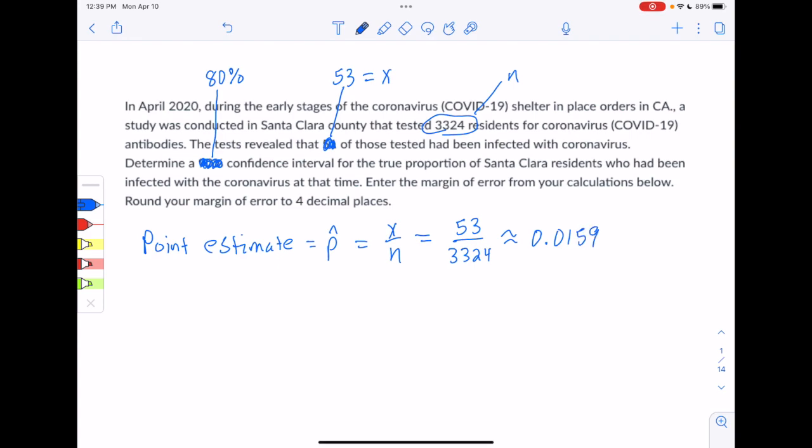Alright, so now we move on to this question, which is to use this point estimate to determine a confidence interval. If we go to our formula sheet and write down the formula for confidence intervals for proportions, we see it's p-hat plus or minus z-star times the square root of p-hat times q-hat over n. And speaking of q-hat, q-hat is 1 minus p-hat.